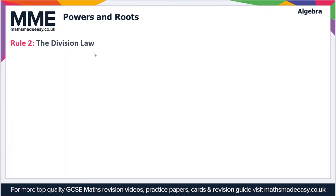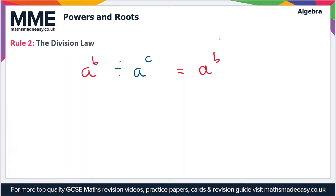Moving on, let's have a look at the division law. This applies when we have a division rather than a multiplication with the same variable. So if we have a to the power b divided by a to the power c, this is going to be equal to a to the power b minus c. So whereas in multiplication we added the powers, in division we subtract the powers.